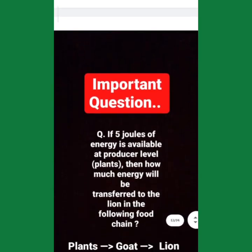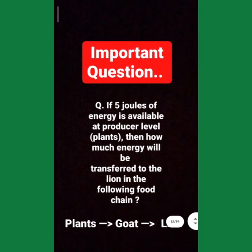Now here is a very important question for you: If 5 joules of energy is available at the producer level, then how much energy will be transferred to the lion in the following food chain? This is a very important numerical based on the 10% energy rule. Tell me the answer in the comment box and I will reply whether it is correct or not.